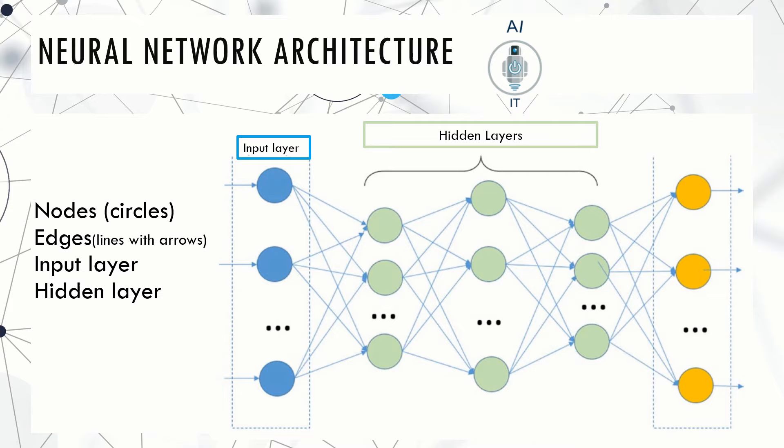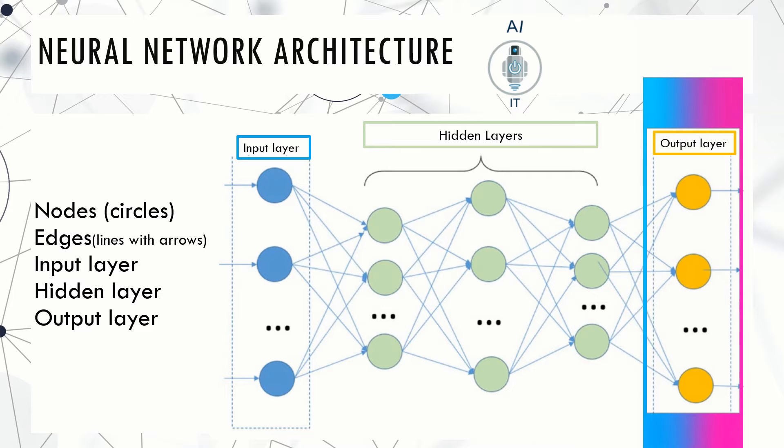They have their own machine learning algorithm based on which they would work. The last layer is the output layer. This layer passes the final processed data to the user. Like the input layer, the output layer also does not do any processing. It only gives the final output to the user.